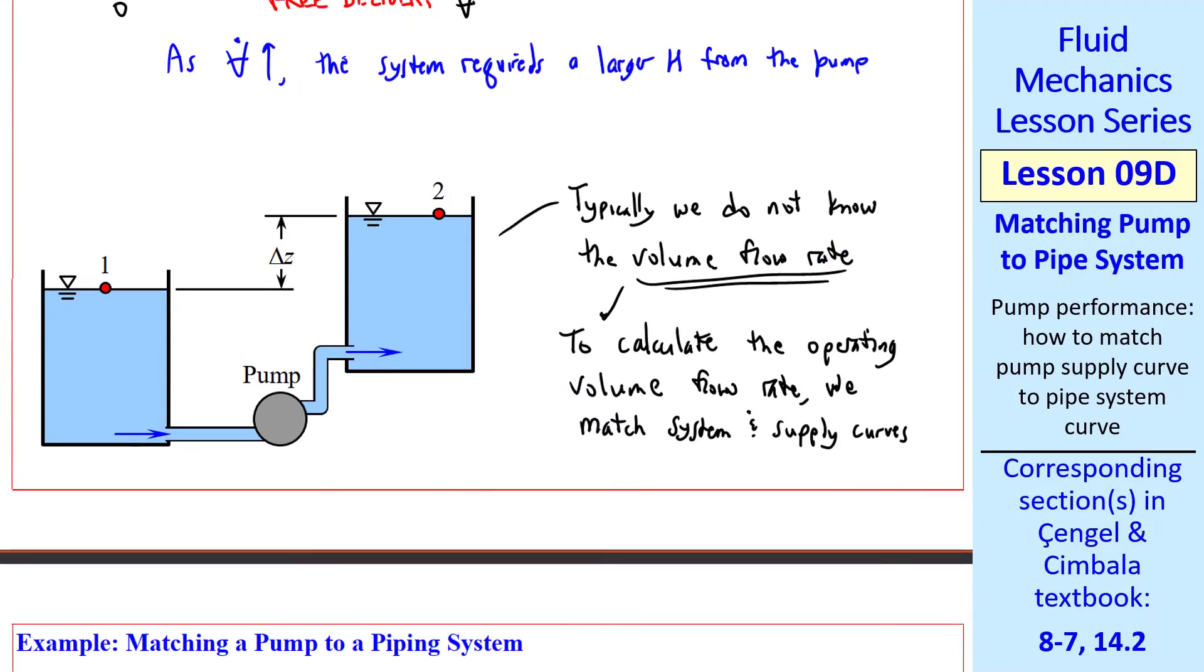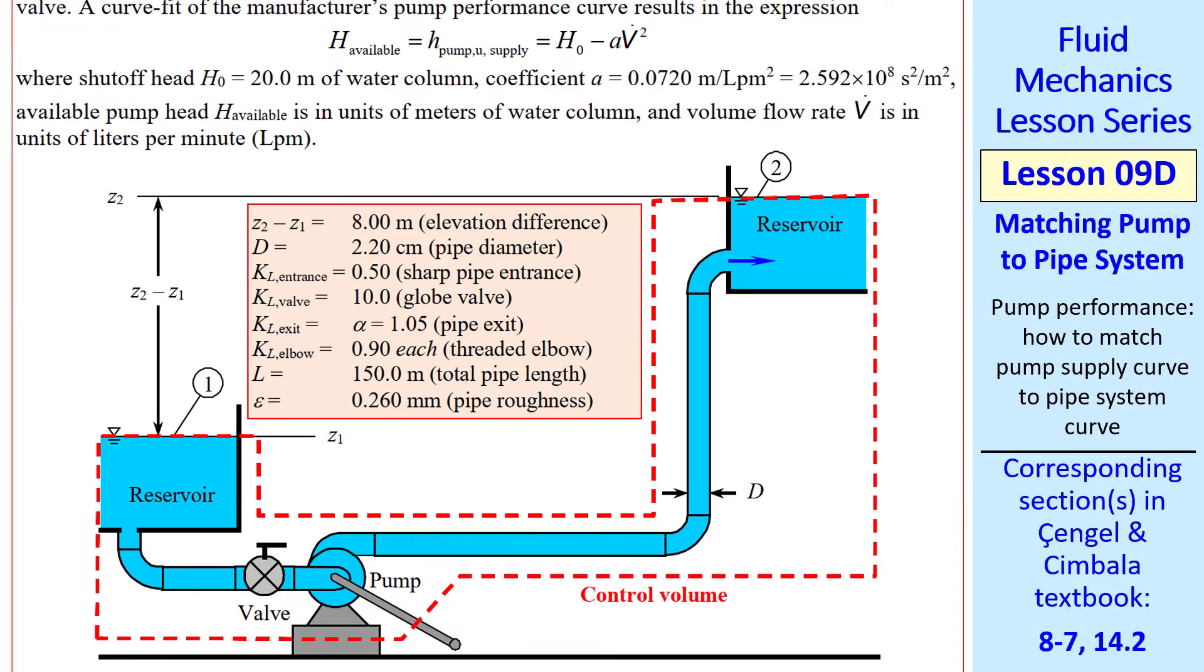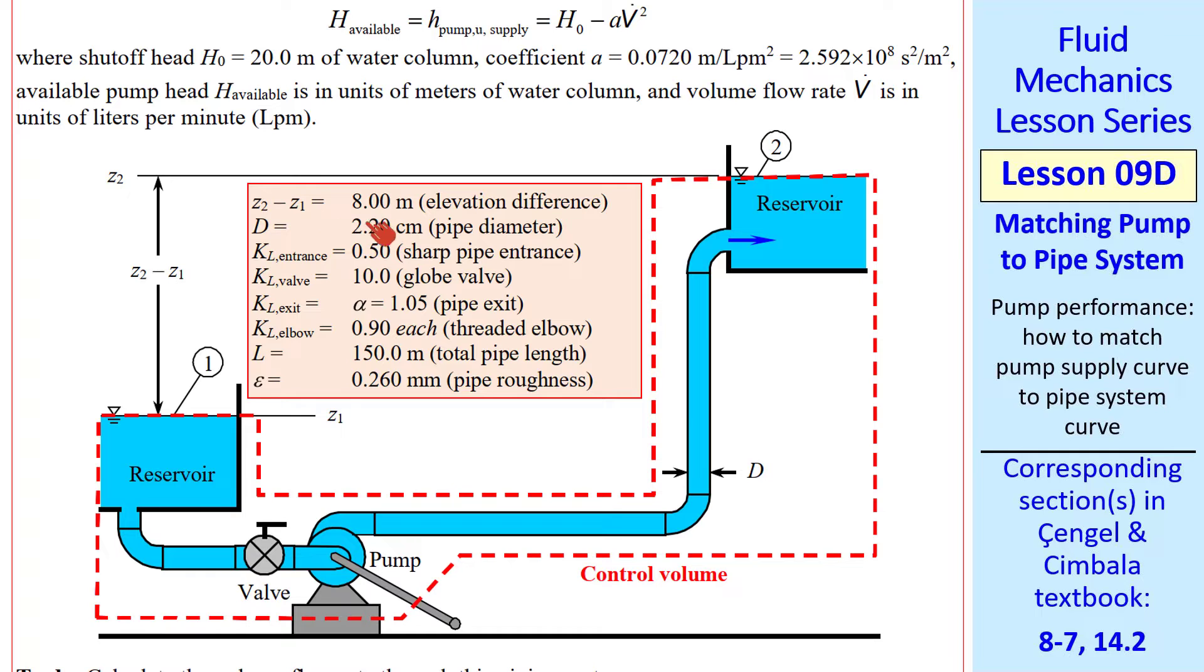We have water pumped from one large reservoir to another. I drew a wise control volume cutting through the surfaces of the two reservoirs and through the shaft of the pump. There are several minor losses: inlet, three elbows, an outlet, a valve, and there are major losses through these pipes.